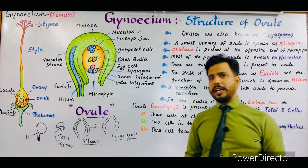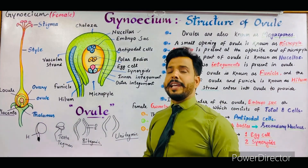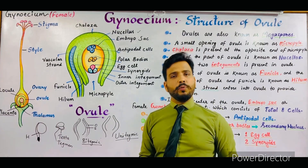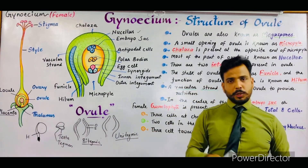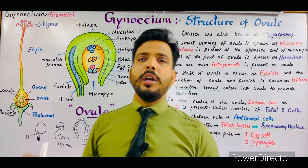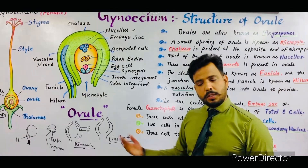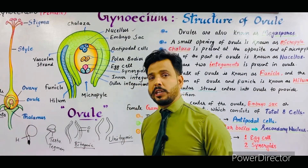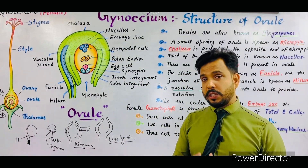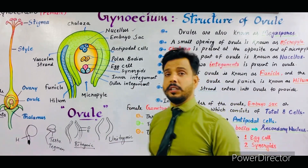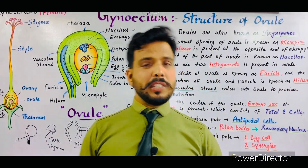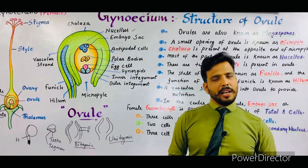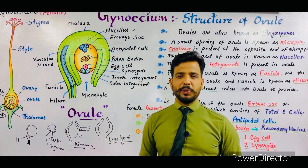In my diagram section, I made a video on how to draw the structure of an angiospermic ovule; the link is provided in the description box. In this video I covered the gynecium — its structure, parts, and especially the structure of the ovule. If you have any questions or suggestions, please ask in the comment section. Thanks for watching, have a good day.